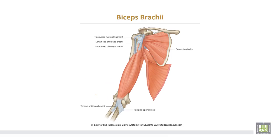This is the biceps. The long head arises inside the capsule of the shoulder — intracapsular. This is the short head, arising from the tip of the coracoid process in common origin with the coracobrachialis muscle. The insertion — this is the tendon of the biceps into the radial tuberosity. The second insertion is via the bicipital aponeurosis to the deep fascia of the forearm.